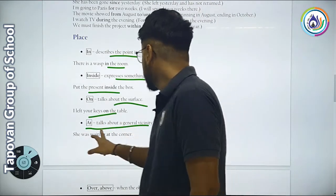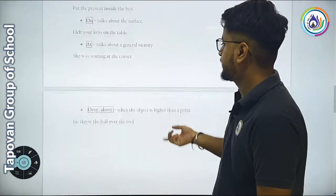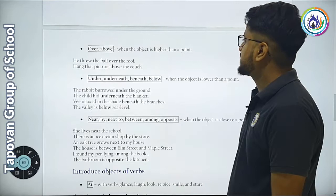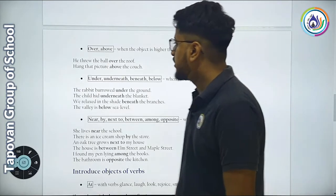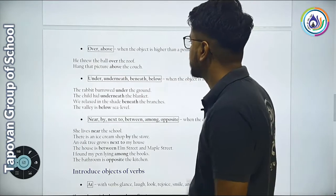At talks about general vicinities. He was waiting at the corner. Over and above are used when the object is higher than a point. He threw the ball over the roof. Hang the picture above the couch.